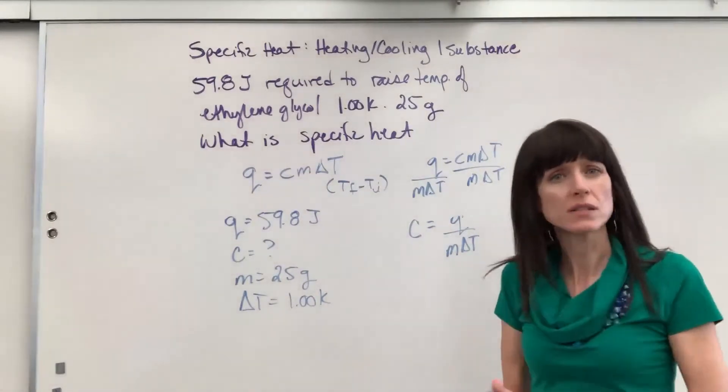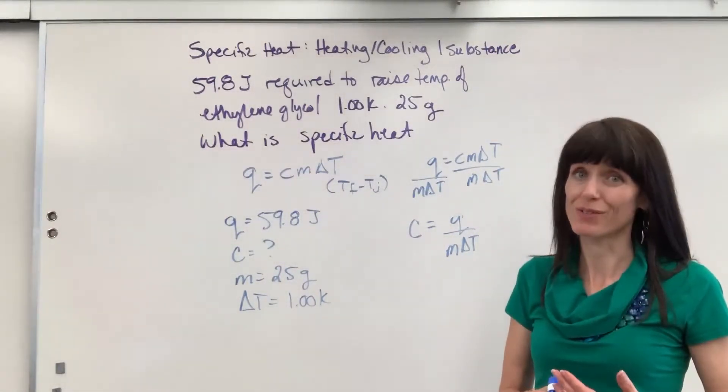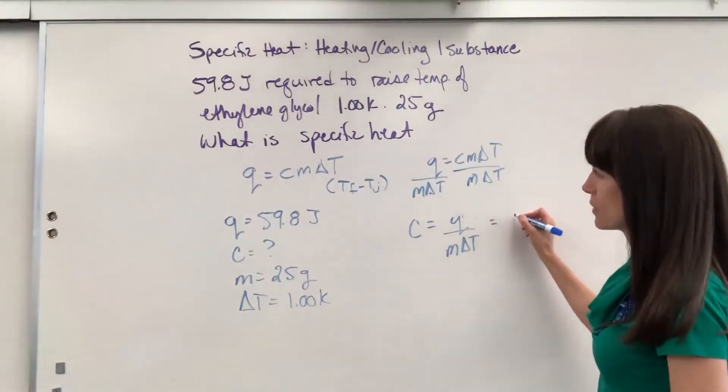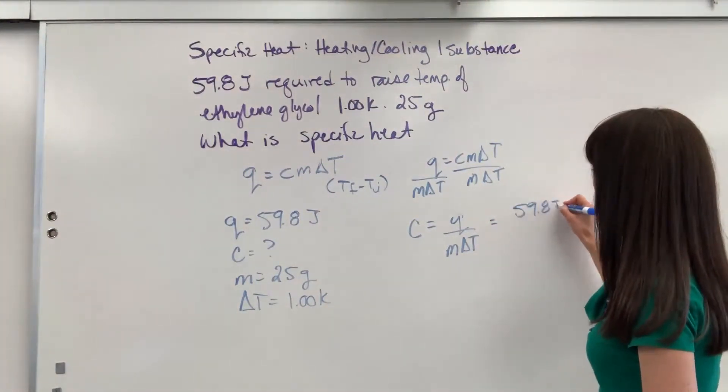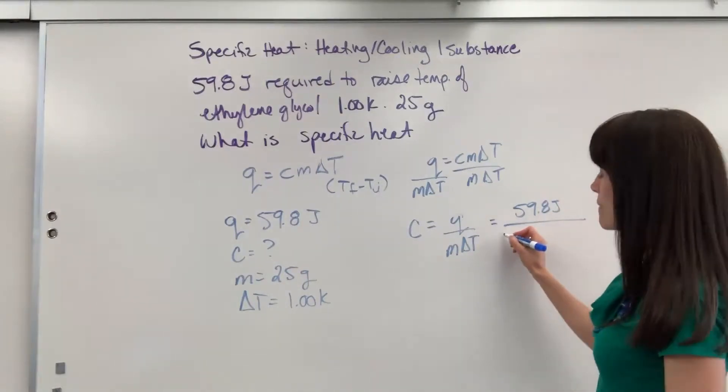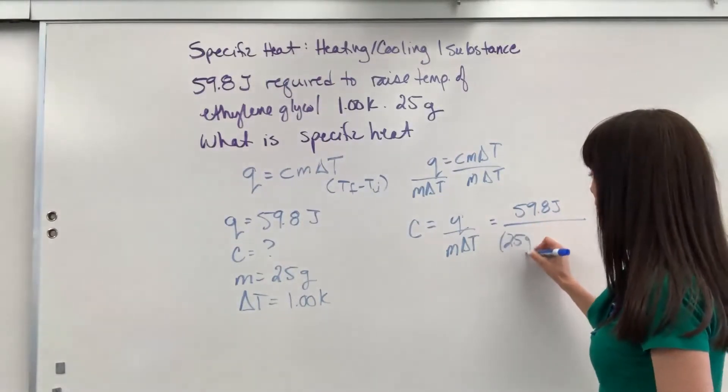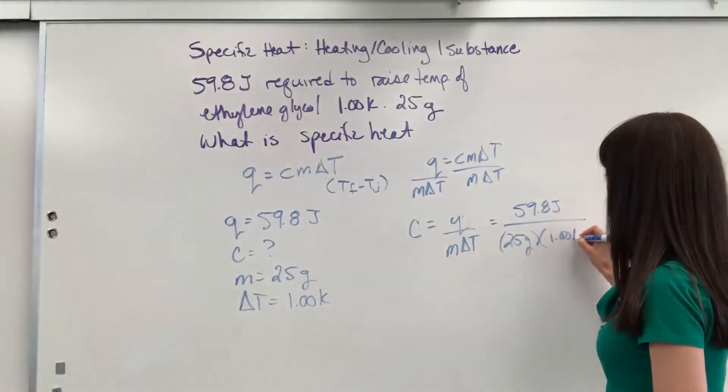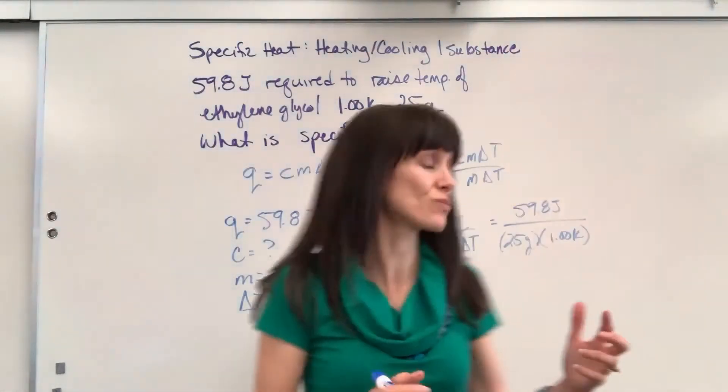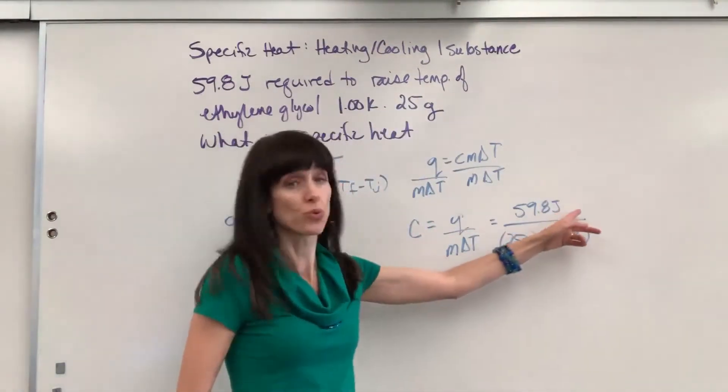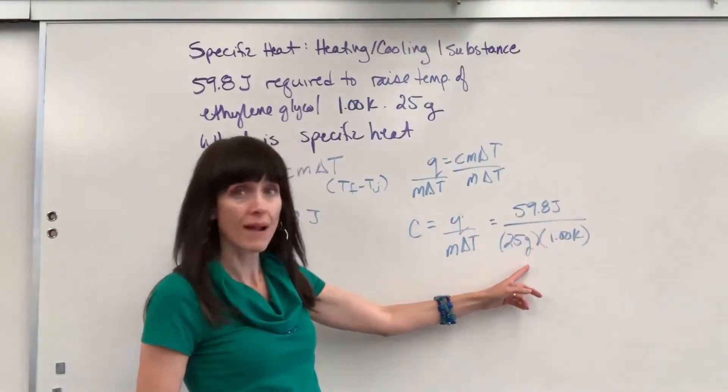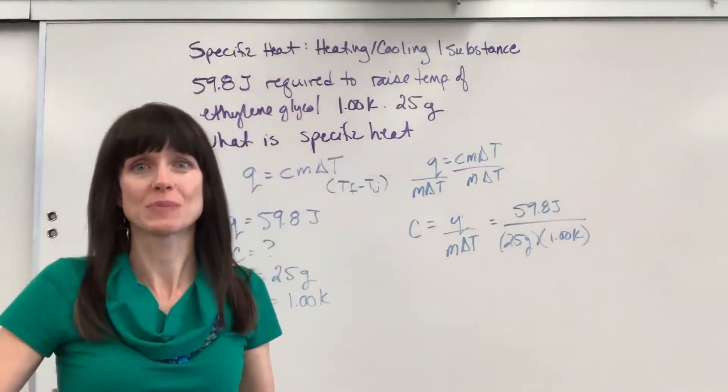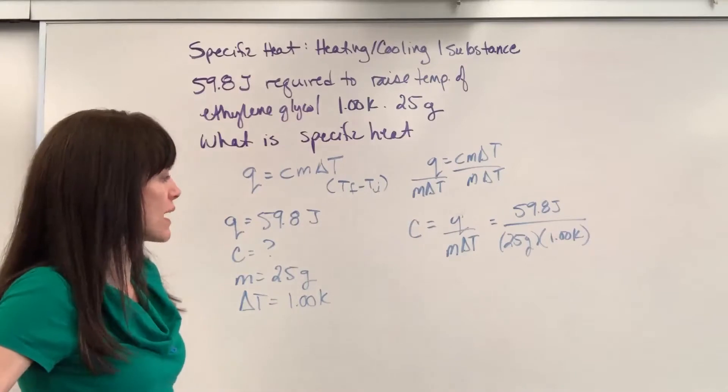Now look at units. Watch the units because they'll always tell you if you've done the equation correctly. So we have 59.8 joules divided by the mass, 25 grams, times the change in temperature was one kelvin. Just look at the units. This is great. We're going to end up with joules divided by gram times kelvin, and that is a unit for specific heat. So it means that we did it right.